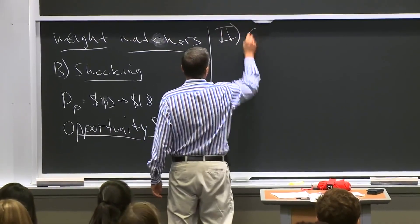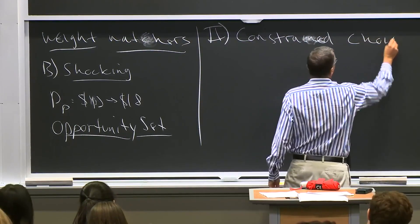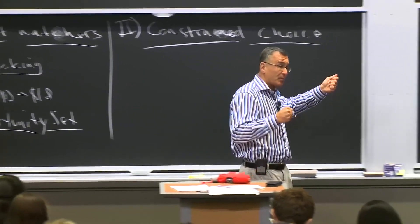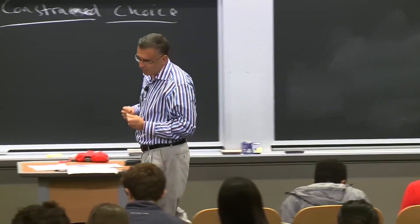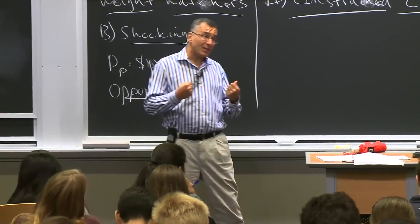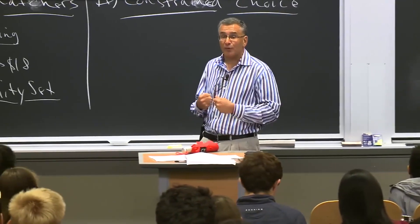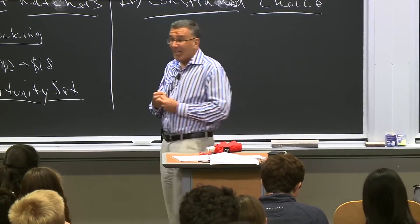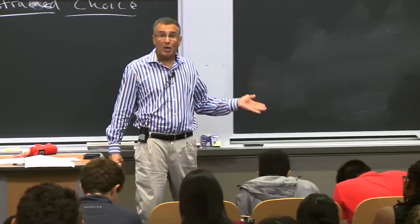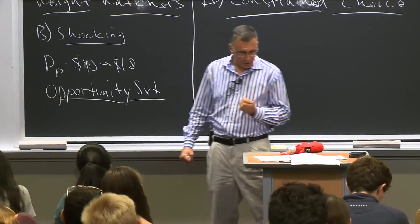Now let's turn to the second part: how we use budget constraints and the utility function from last time to describe how consumers make choices. Consumers maximize utility subject to a budget constraint. Graphically, preferences are represented by indifference curves — further-out indifference curves make people happier. So the question becomes: what is the highest indifference curve you can reach given your budget?